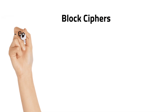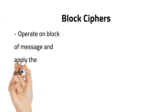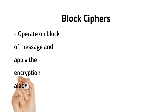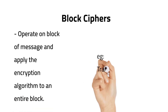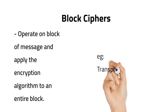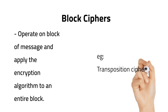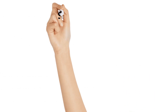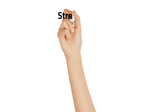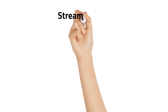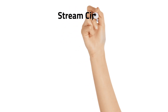The next one is block cipher. Block cipher operates on blocks of a message and applies the encryption algorithm to an entire block at the same time. A very good example of block cipher is the transposition cipher.